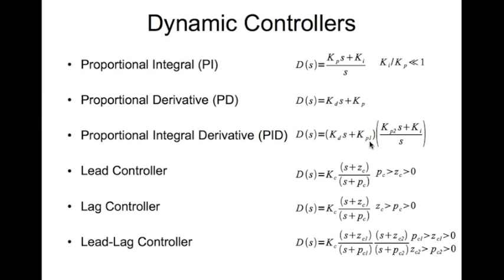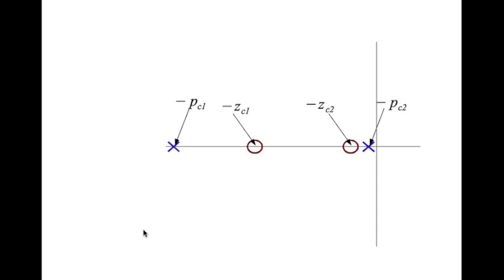Finally, the lead-lag controller is a combination of a lead controller and a lag controller. When designing a lead-lag controller, you first satisfy transient requirements using the lead controller, and then satisfy steady-state error requirements using the lag controller. In the pole-zero map, you can identify the lag part and the lead part of the controller separately.